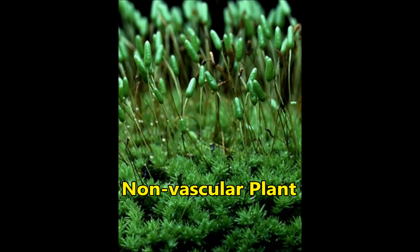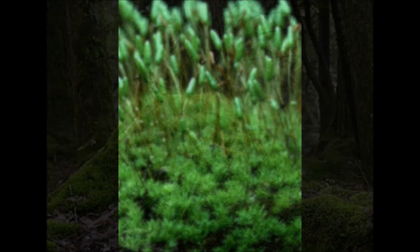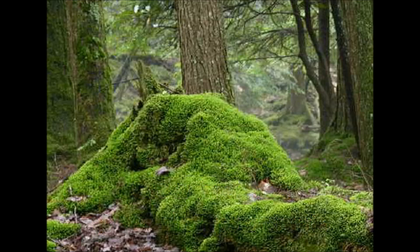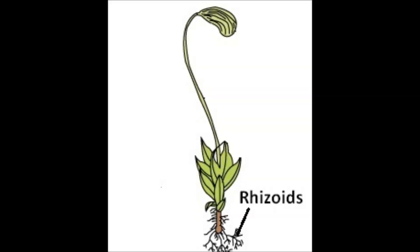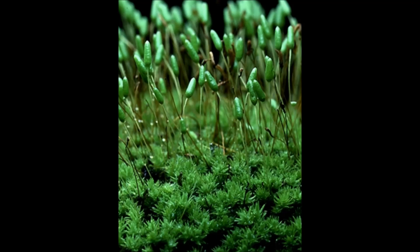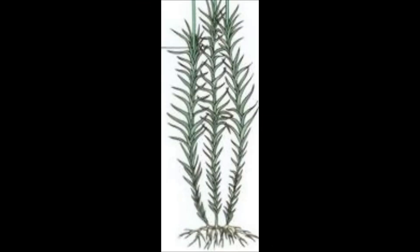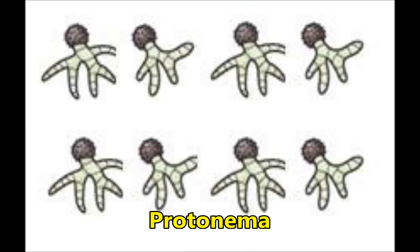Mosses: Mosses are small, nonvascular bryophytes. They grow in dense green clumps or mats, often in damp or shady locations. They have root-like multicellular rhizoids. They have a haplodiplontic life cycle where haploid and diploid life forms alternate. The predominant stage of the life cycle is the gametophyte, which consists of two stages: the protonema stage and the leafy stage.